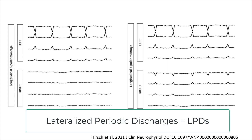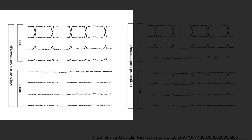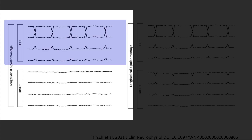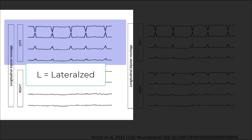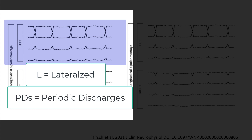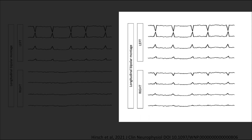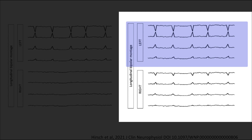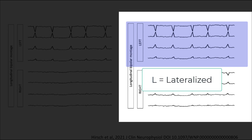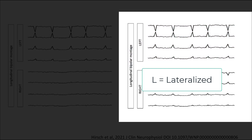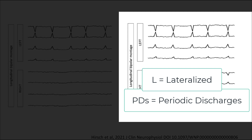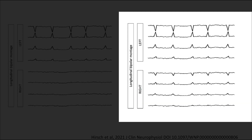These are both examples of lateralized periodic discharges. In the first example, discharges are exclusively present in the left hemisphere with a clear inter-discharge interval — we call these LPDs. In the other example, discharges are present in both hemispheres but clearly much higher voltage in the left. When a pattern is much more prominent in one hemisphere, we call it lateralized and add the descriptor bilaterally asymmetric, giving us LPDs bilaterally asymmetric.